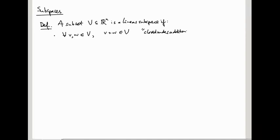So what is a subspace? A subset V inside R^n is a linear subspace if two conditions hold. First of all, for all V and W in V, V plus W is also in V. So this is saying that it's closed under addition. If you take two vectors and add them, it's still in the subspace.